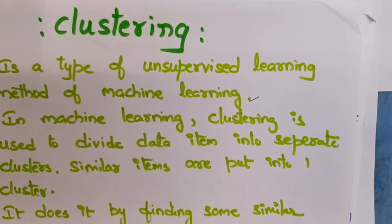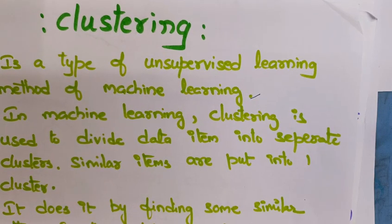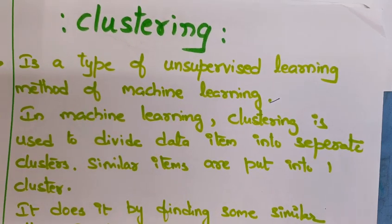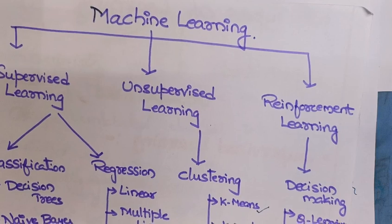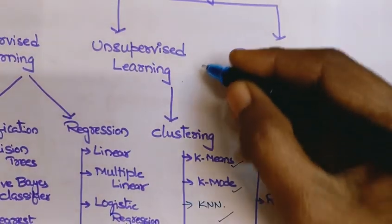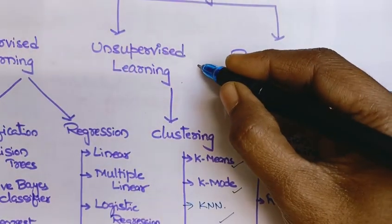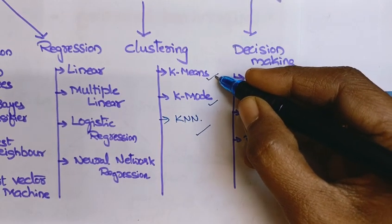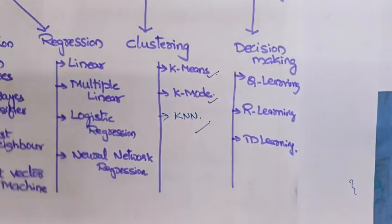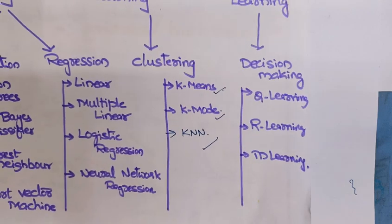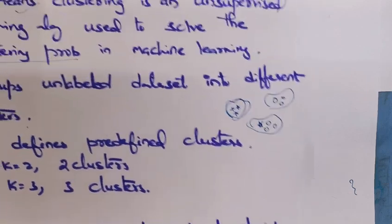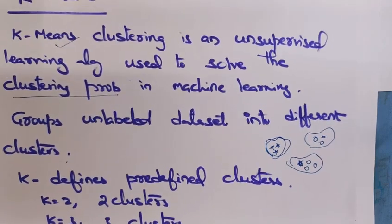In the last session I explained about clustering. Now we will see algorithms on clustering. Clustering comes under unsupervised learning. Some of the clustering algorithms are K-Means, K-Mode, and KNN. We will see them one by one, starting with K-Means.